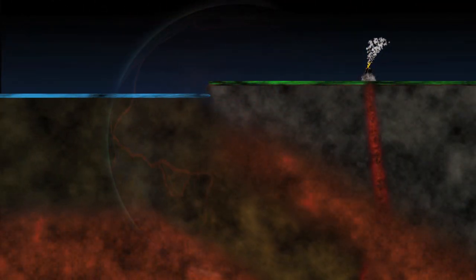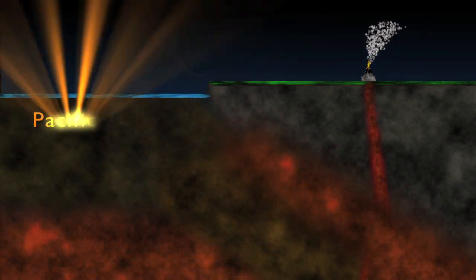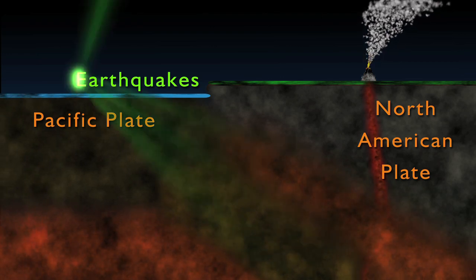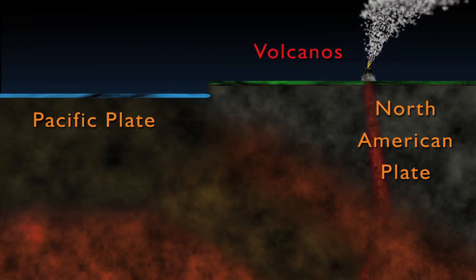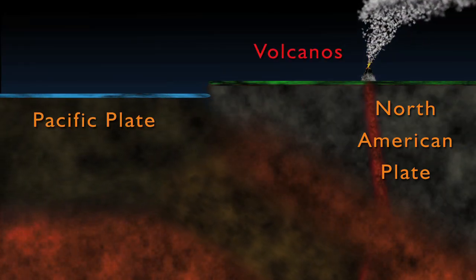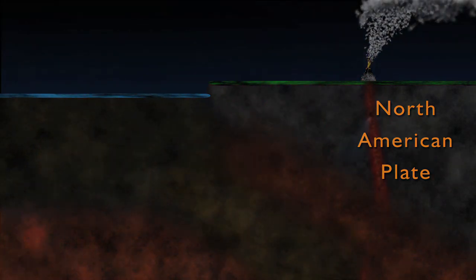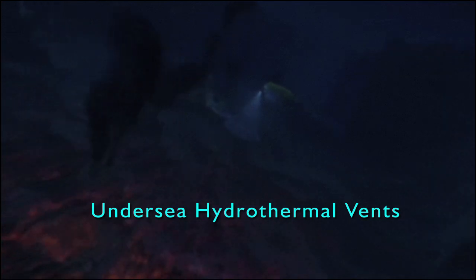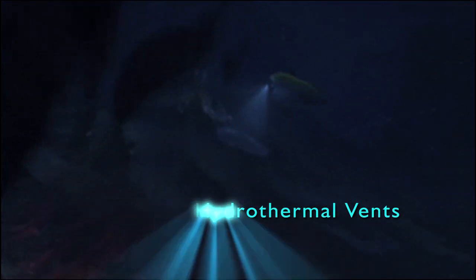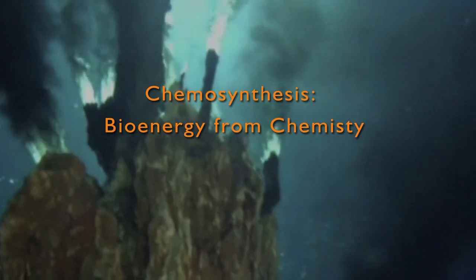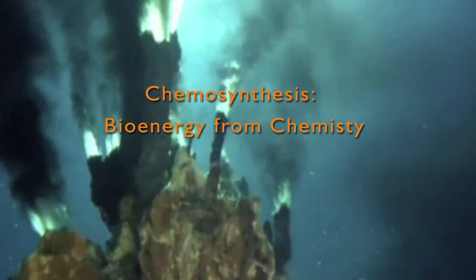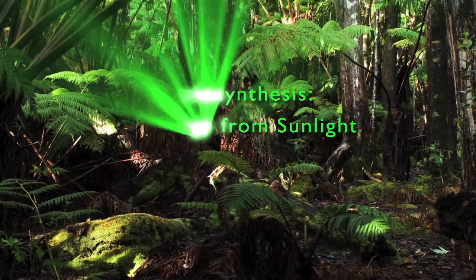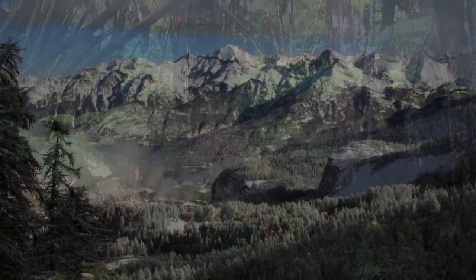The tectonic plates of the Earth inch almost imperceptibly, gliding over the Earth's molten mantle like giant conveyor belts. Along the boundaries of these tectonic plates, we find regions of mountain building and subduction where earthquakes caused by friction between the plates rattle the Earth, and volcanoes can erupt in cataclysmic fashion, affecting life for thousands of miles in all directions. Beneath the oceans, we find thermal vents along the boundaries of the tectonic plates, which give rise to colonies of life that derive their sustenance from chemosynthetic bacteria.